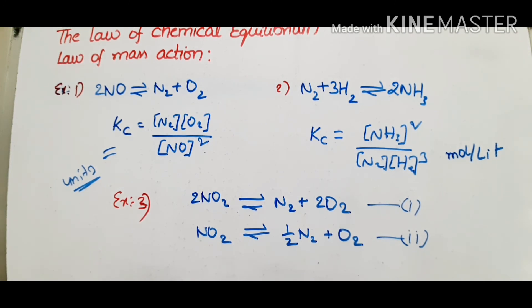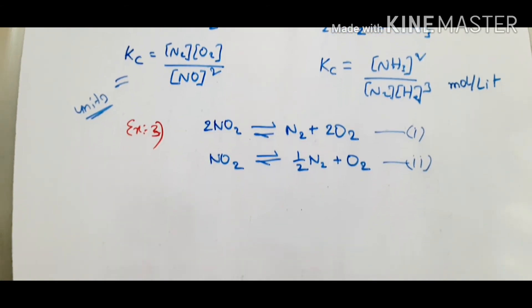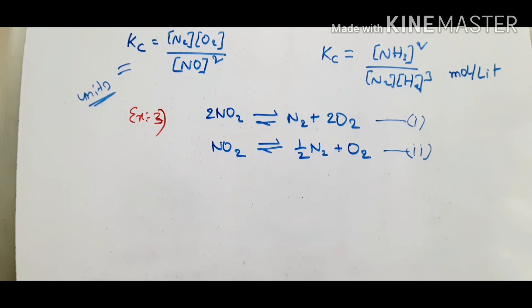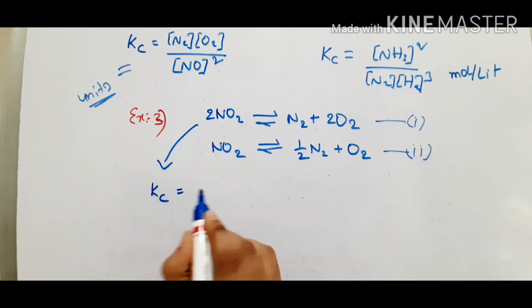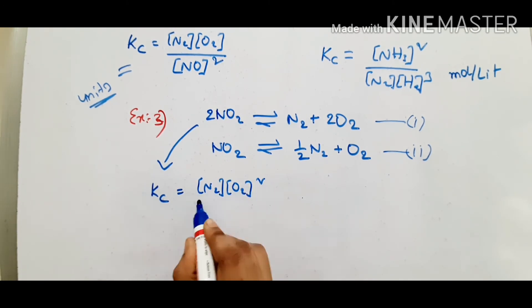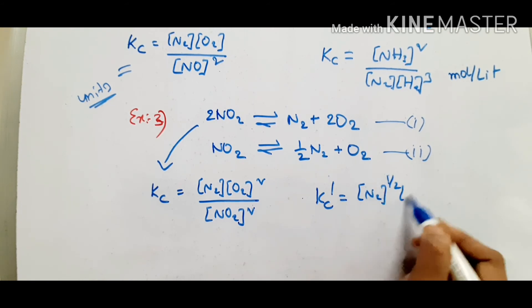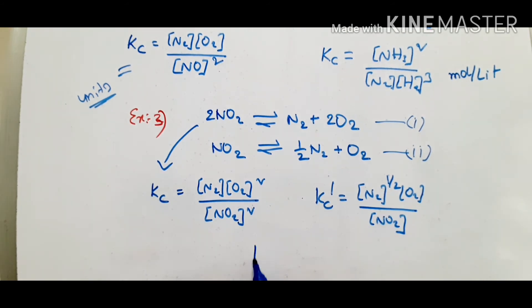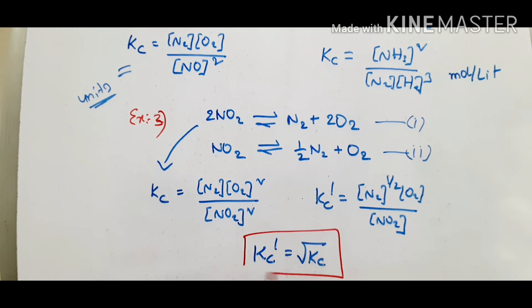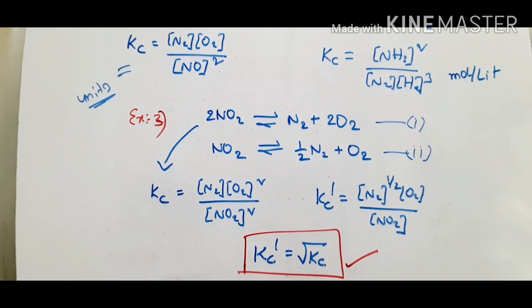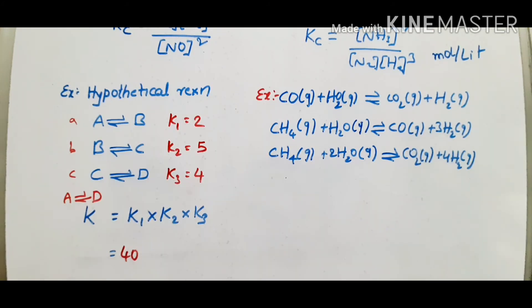In the case of a reversible reaction carried out in steps with two stoichiometric equations, such as the dissociation of NO2, each step has its own equilibrium constant. The overall equilibrium constant Kc equals K1 into K2, the product of the individual step equilibrium constants. This is the relationship between equilibrium constants of two stoichiometric reactions when a chemical reaction is carried out in steps.